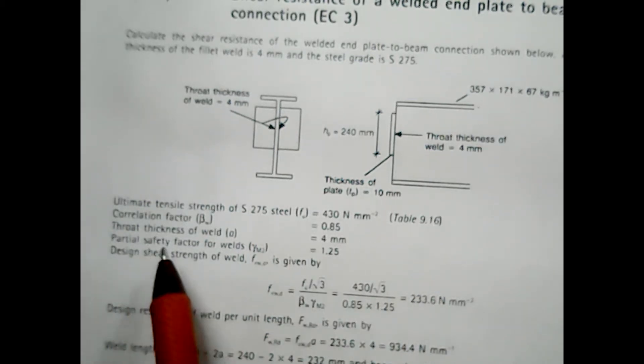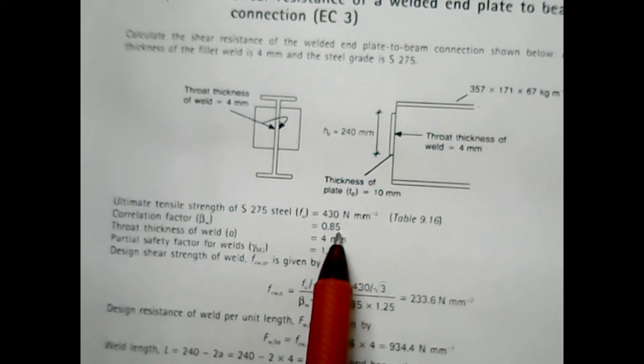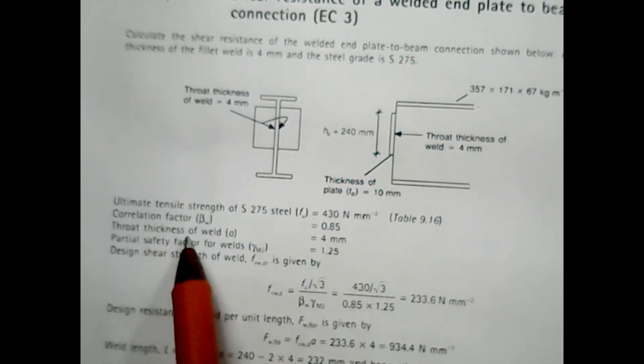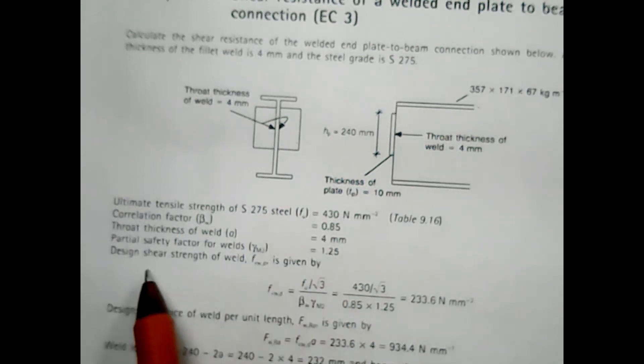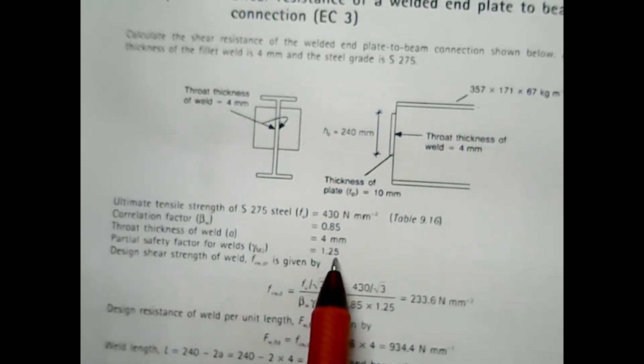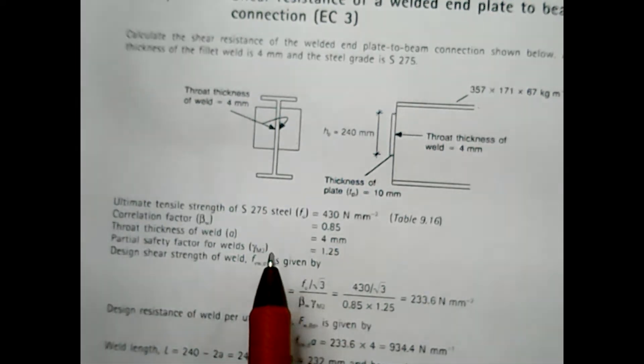Correlation factor 0.85, throat thickness of weld is 4mm, and the partial safety is 1.25. When you do the calculations...